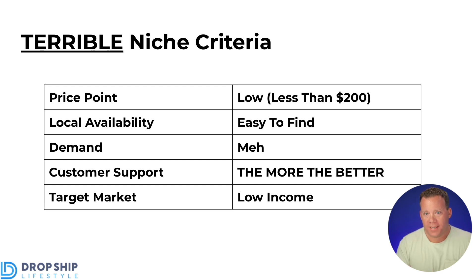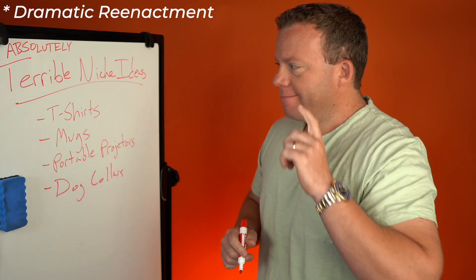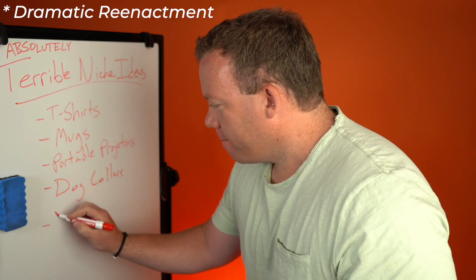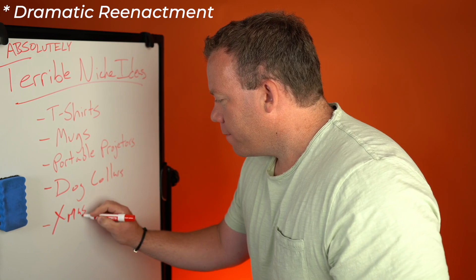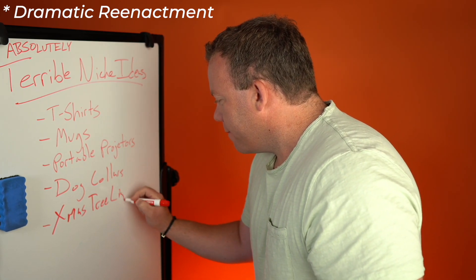If you do all these things and put it all together, you are almost guaranteed to lose money by picking a terrible niche. I'm sure a lot of people are thinking, 'Anton, thanks for the tips, I appreciate the criteria' — by the way if you do, be sure to give it a like — but I'm sure you also want the actual terrible niche. So I did spend some time brainstorming — kind of a ridiculous way to spend my time — but I think I found the absolute worst. Drum roll please: terrible niche idea number one that is almost guaranteed to lose you money...